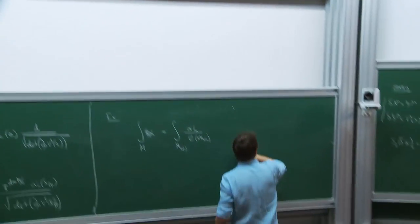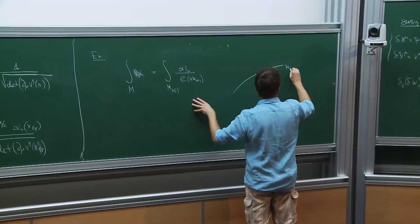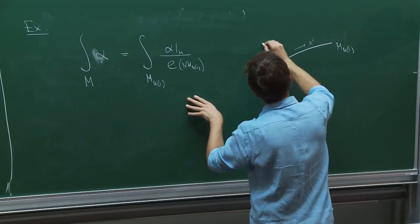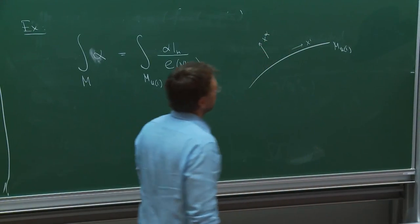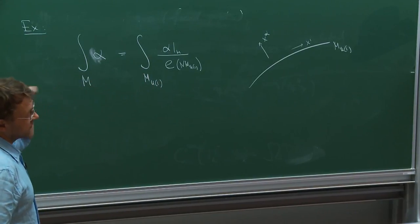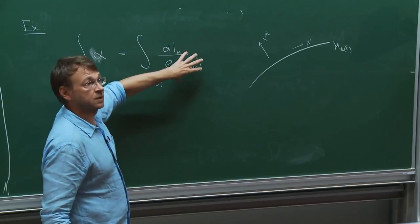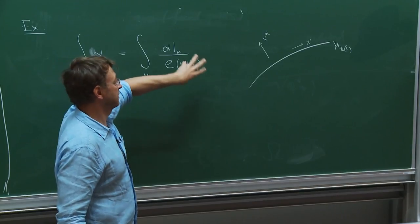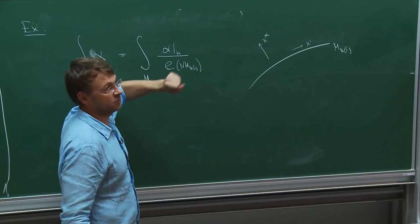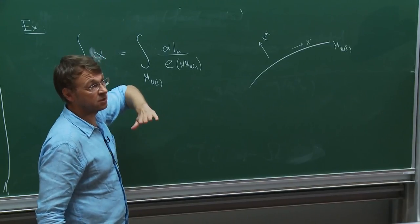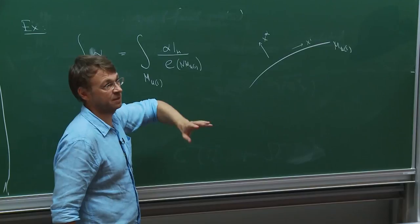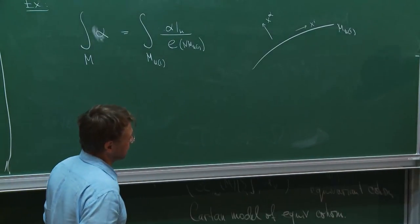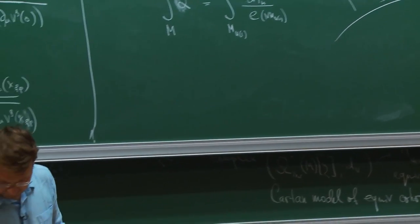The way to derive it is: repeat this calculation but split coordinates along the fixed locus and transverse to it. You need to expand the metric, which is why curvature will appear. Do everything up to quadratic order, differentiate along the locus directions — curvature terms appear there. Using normal coordinates makes it explicit. It's a hard exercise — you have to remember a lot of stuff — but in principle it's a straightforward calculation.